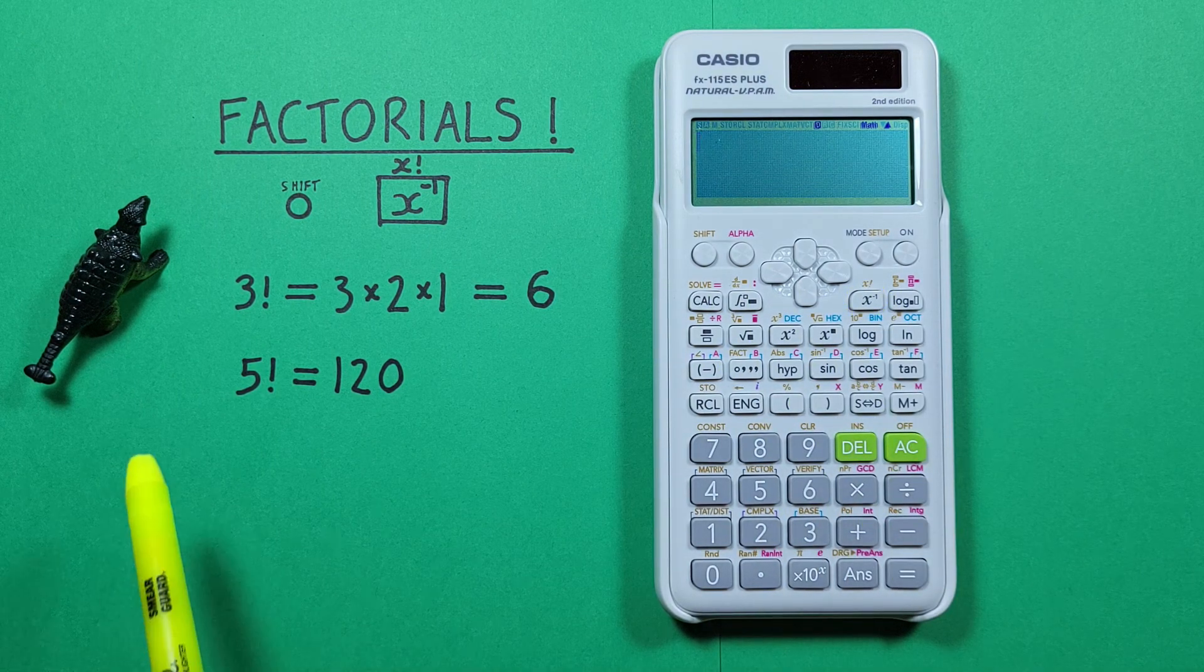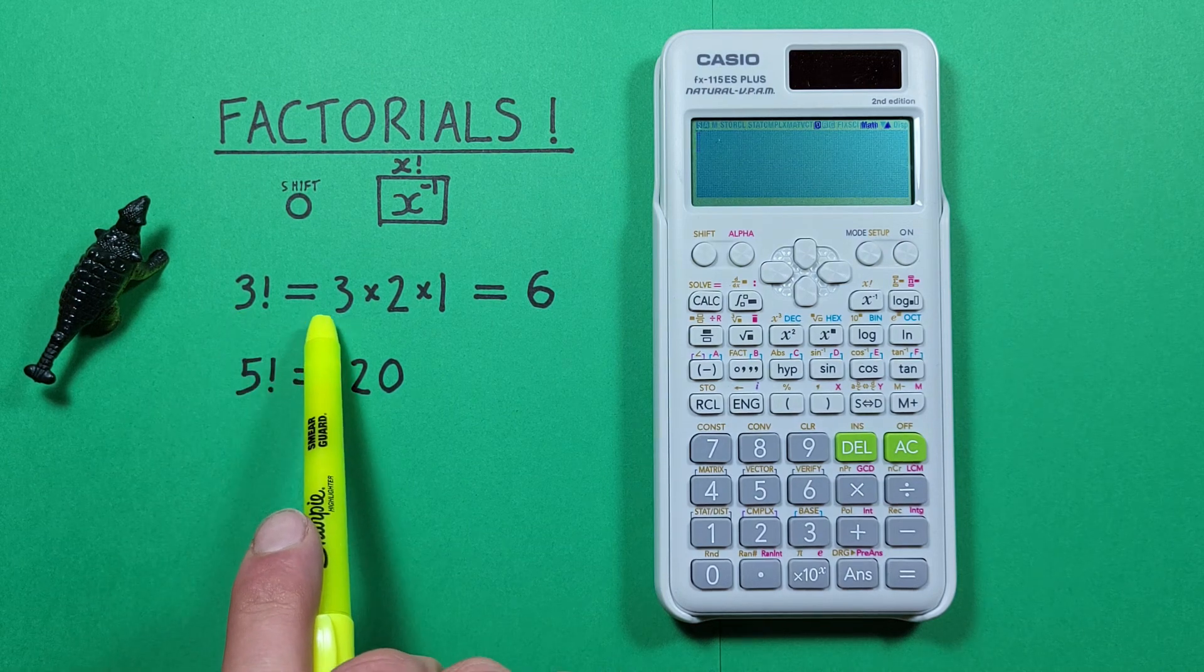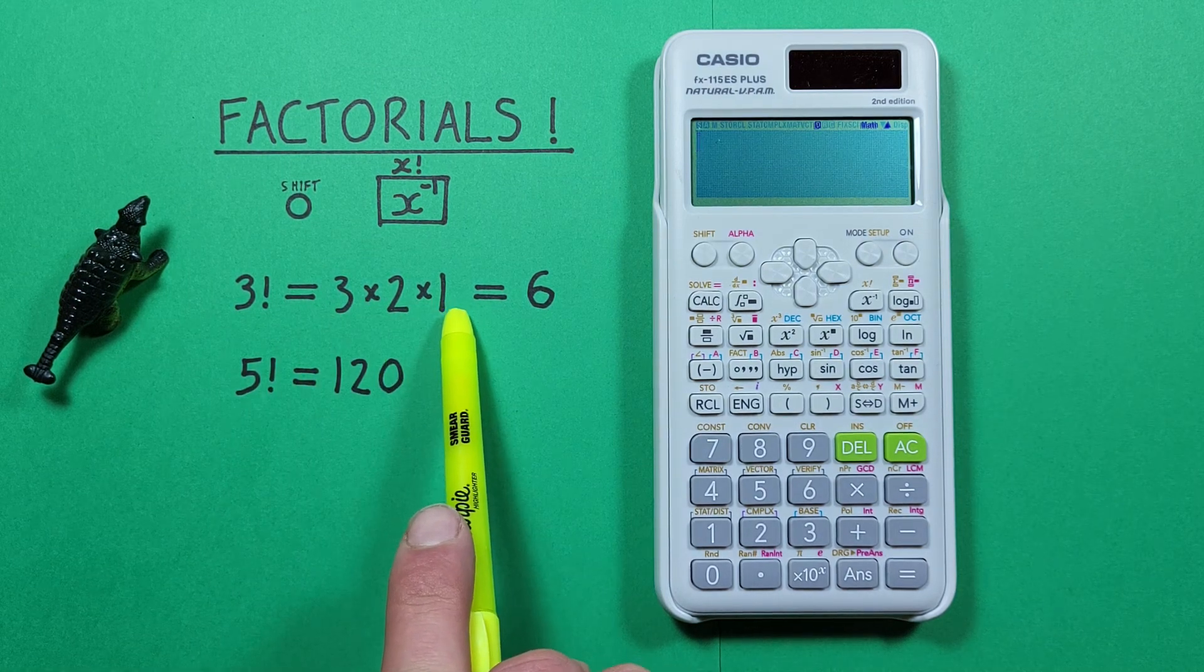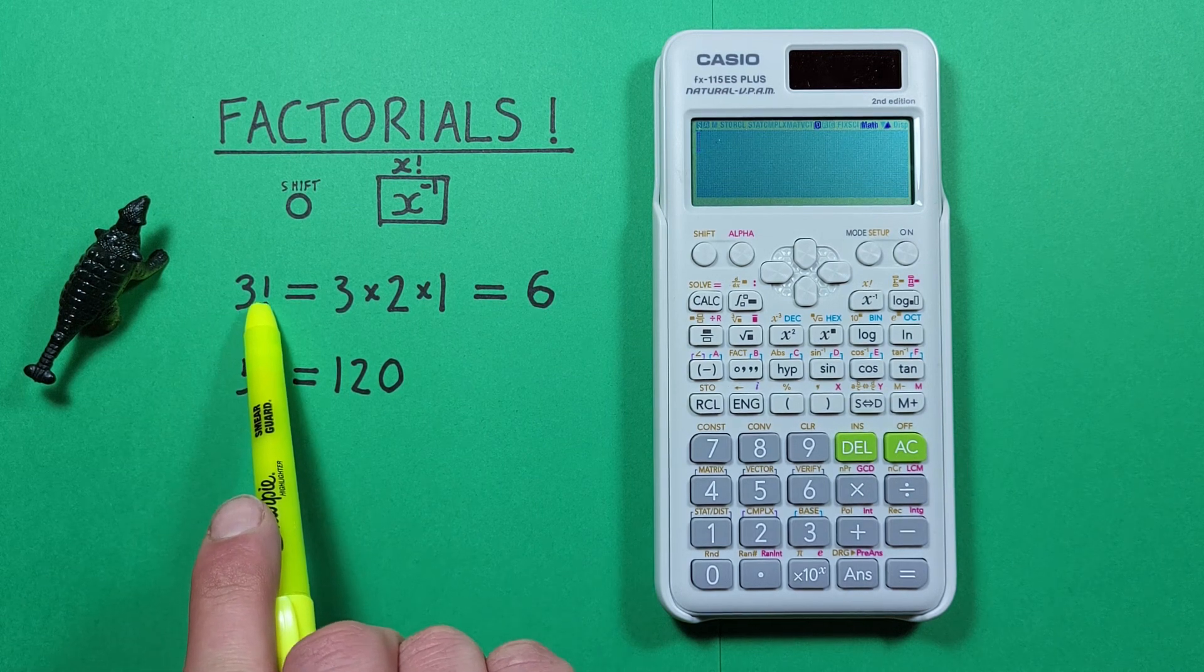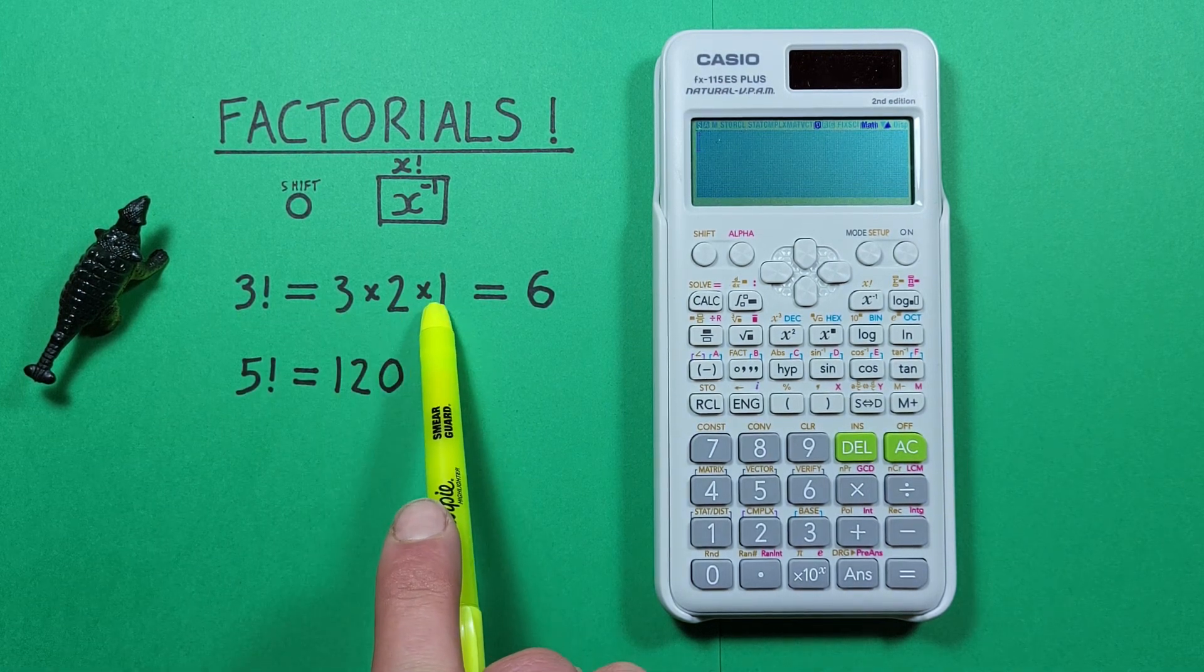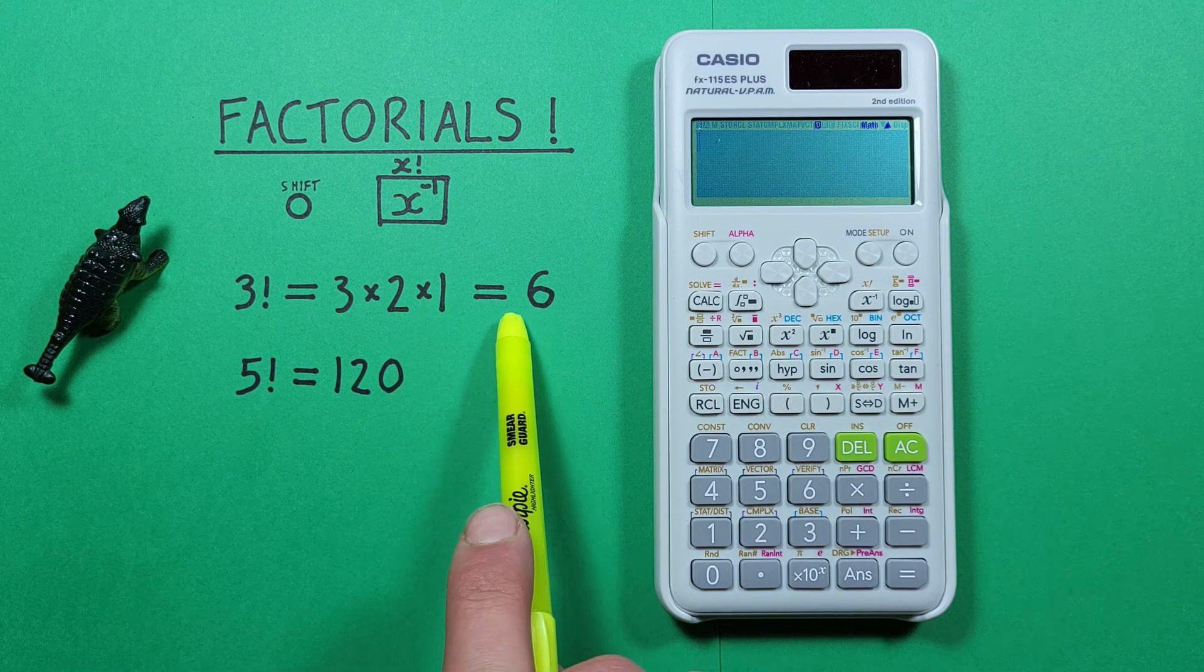So we know that a factorial is the same as a number and all integers below it multiplied together. So 3 factorial is the same as 3 times 2 times 1 which we know equals 6.